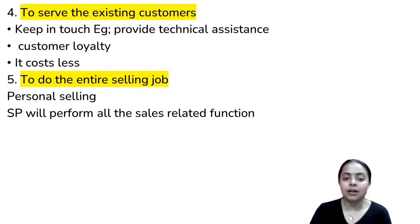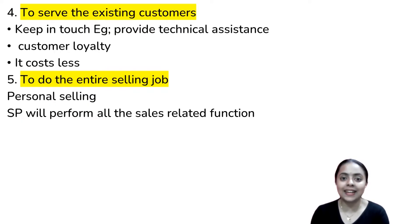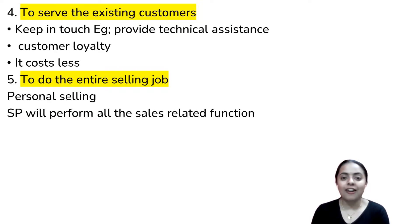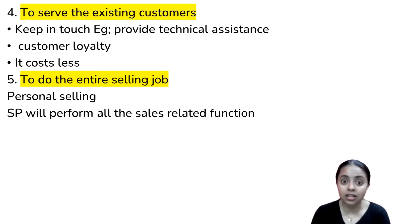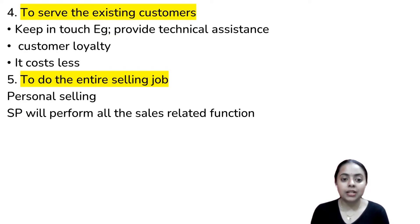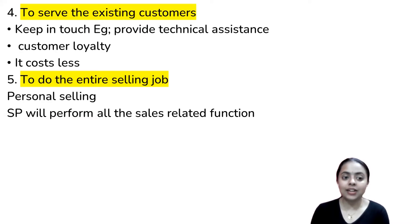The fourth qualitative objective is to serve existing customers. If customers are interested in installation or technical assistance, you keep in touch with them. Building relationships, retaining loyal customers, and doing the entire selling job — these are all part of the qualitative objectives of personal selling.